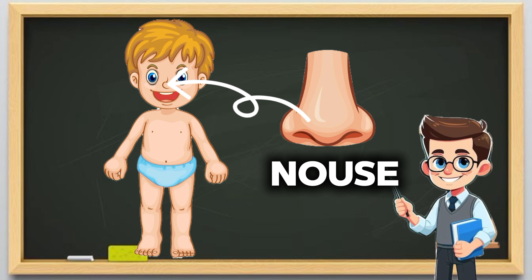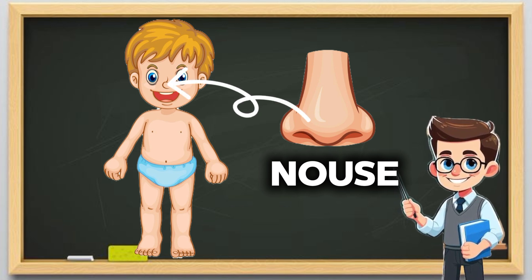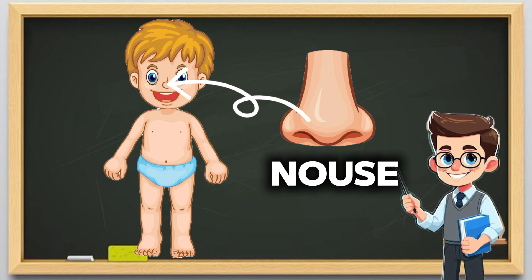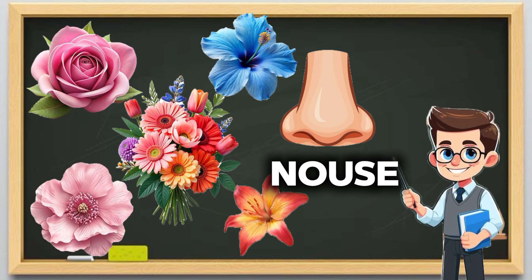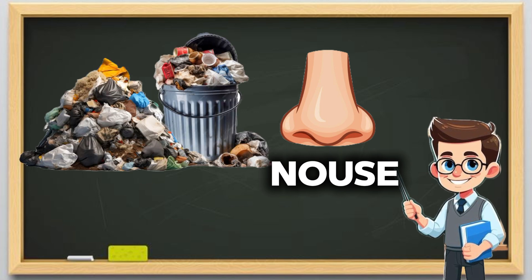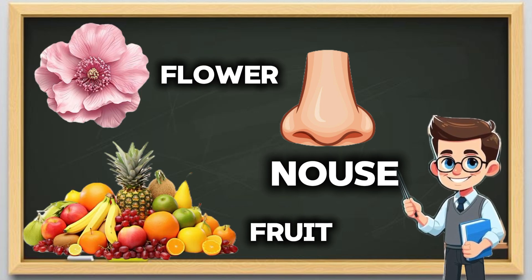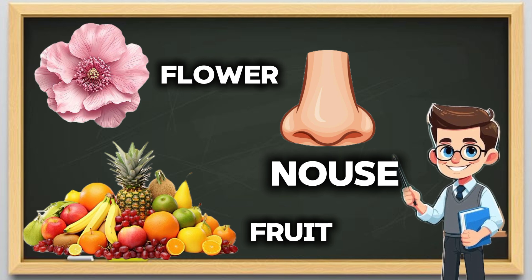3. Smell. Nose. This is our nose. We use it to smell. Some things smell good, like flowers. Some things smell bad, like dirty socks. Hmm, this smells nice.